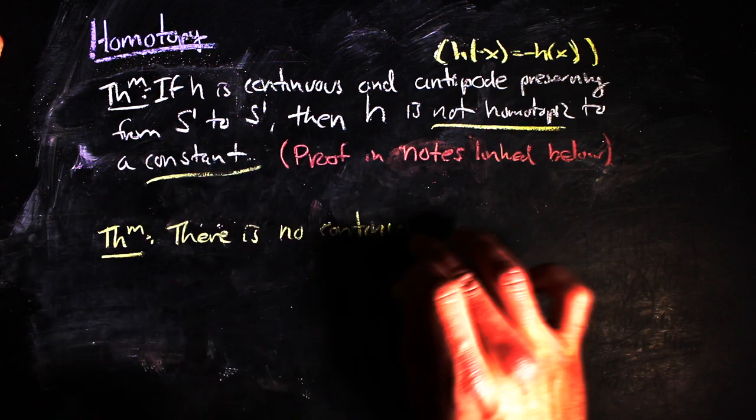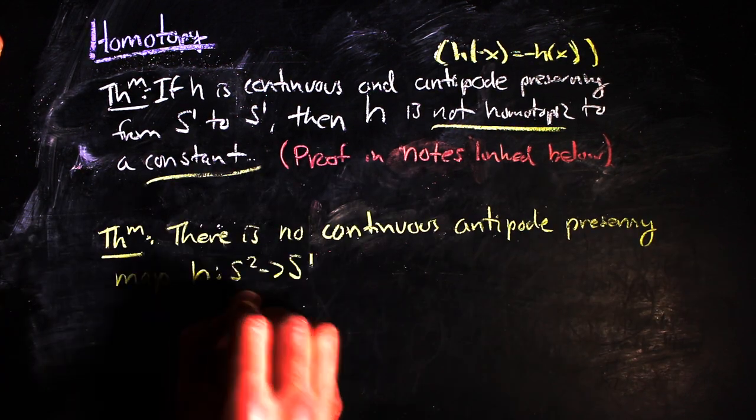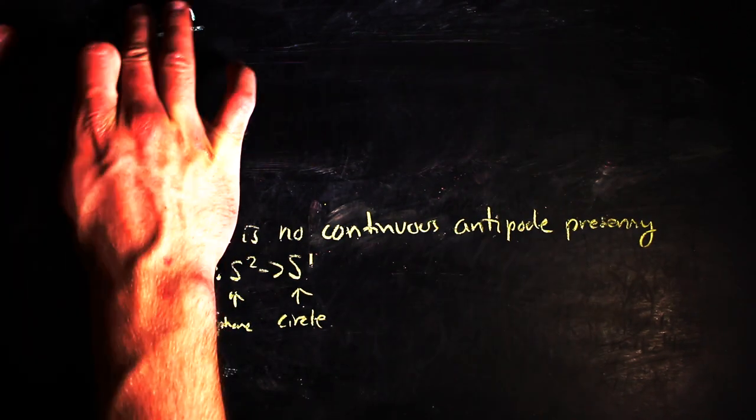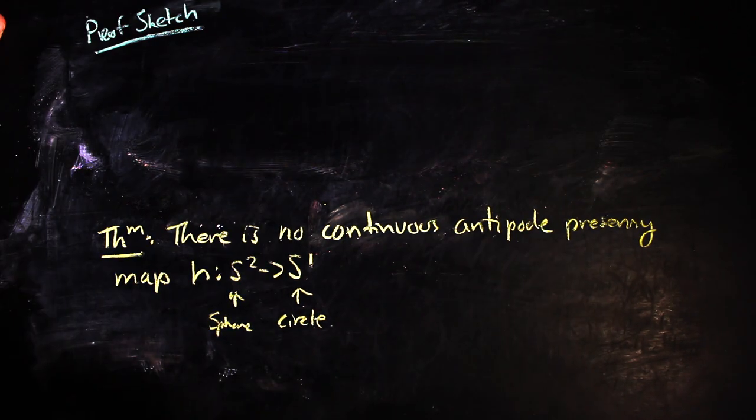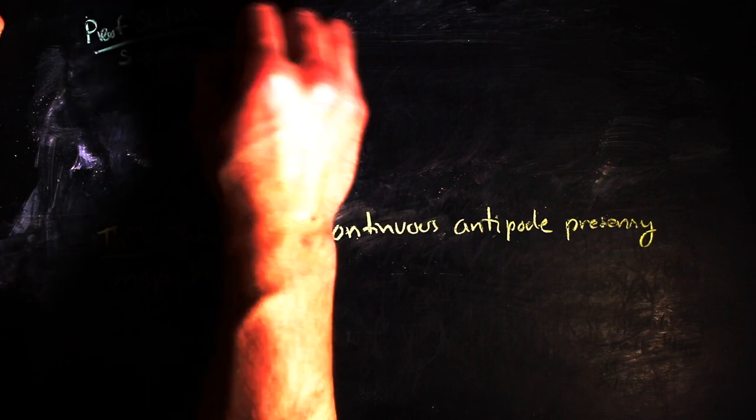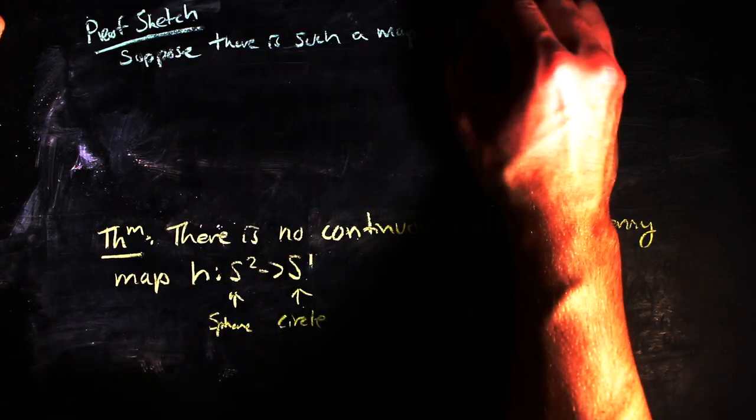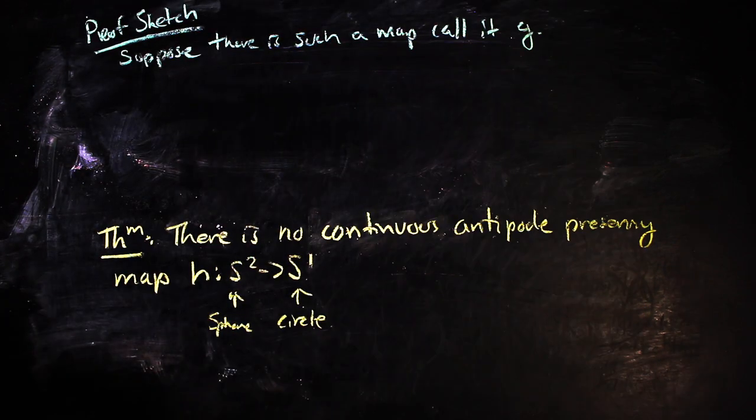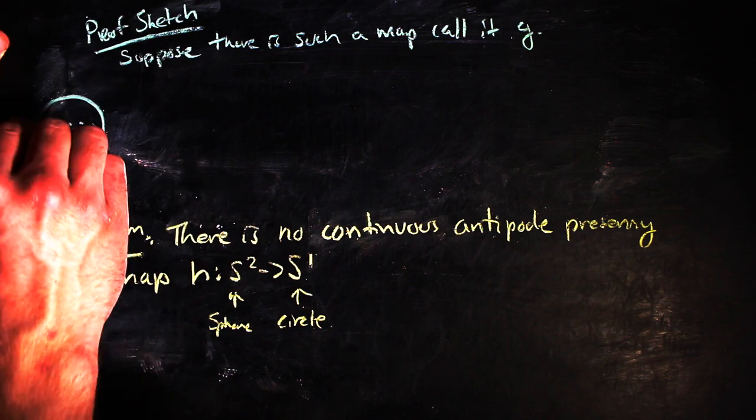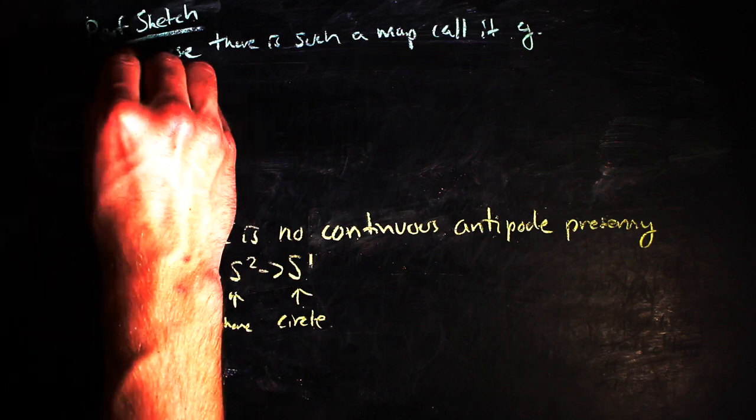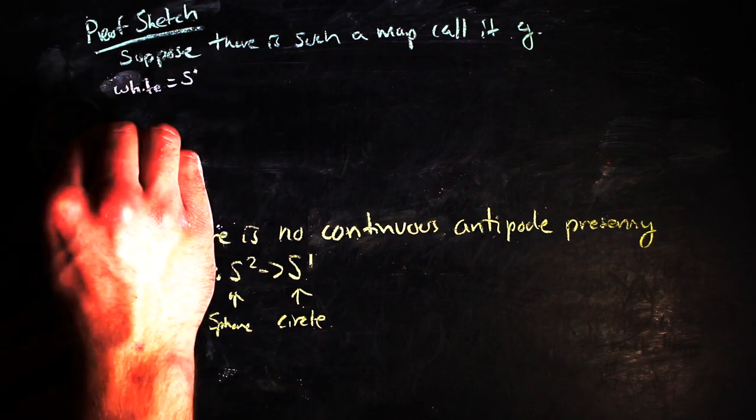There is no continuous antipodal preserving map from the sphere to the circle. Note that for the following proof sketch, we're going to use polar coordinates when we talk about things. Suppose that there was such a map. Call it G. It is continuous and antipodal preserving. Then we can think of the equator of the sphere as our circle S1.